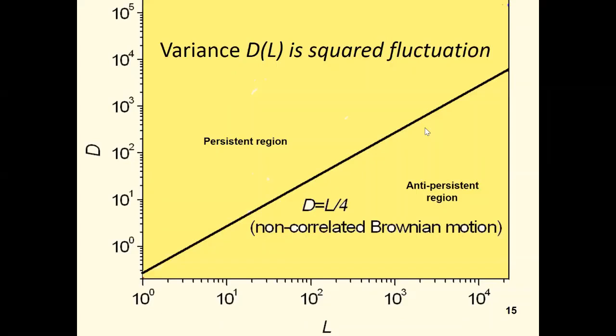The variance of the distribution is the square of the fluctuation of k near its mean value L over 2. For uncorrelated binary sequence, it equals L over 4. This straight line is a separatrix dividing the dL region into persistent and anti-persistent correlations.